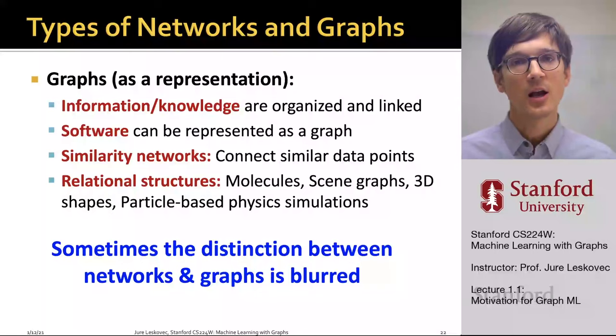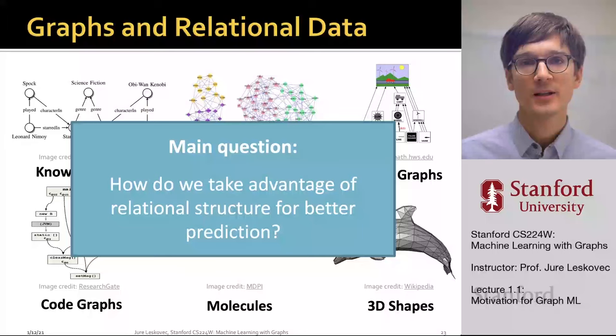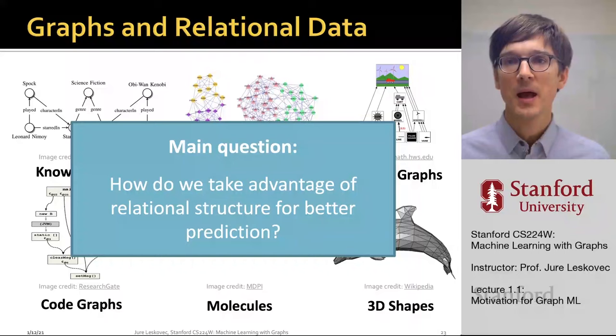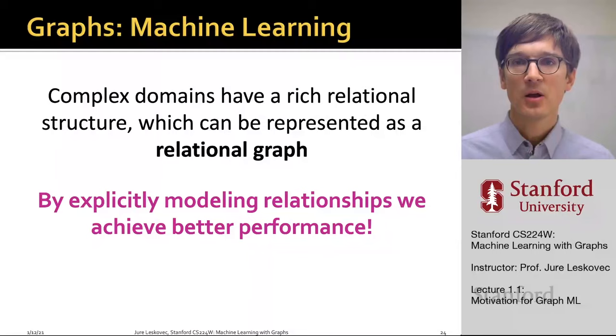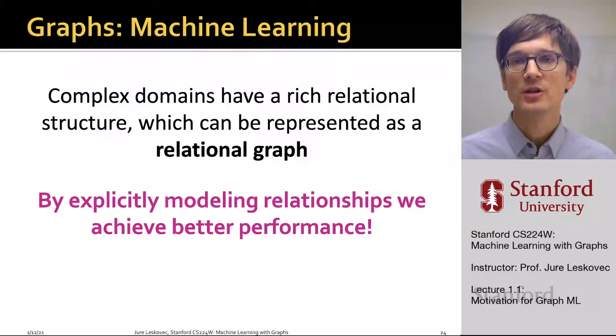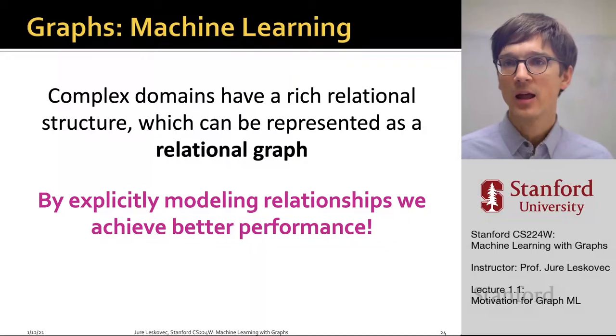The main question for this class is: how do we take advantage of this relational structure to make better, more accurate predictions? This is especially important because complex domains have rich relational structure which can be represented with a graph. By explicitly modeling these relationships, we will be able to achieve better performance, build more accurate models, and make more accurate predictions.